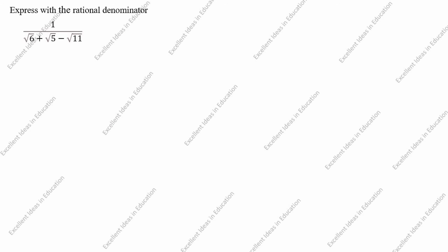Hi students, welcome to my channel Excellent Ideas in Education. Today we are going to solve this rationalize the denominator problem. Express with the rational denominator: 1 divided by root 6 plus root 5 minus root 11. Now we will solve the problem 1 divided by root 6 plus root 5 minus root 11.